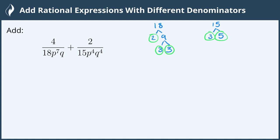Now we need to find all of the common factors between the two so we'll line them up. Our first denominator has 2 times 3 times 3 and then we have 7 p's so we'll write those all down: 1, 2, 3, 4, 5, 6, 7 and then we have 1 q.